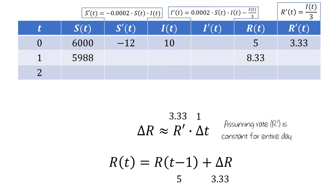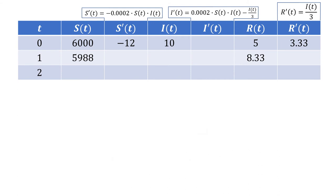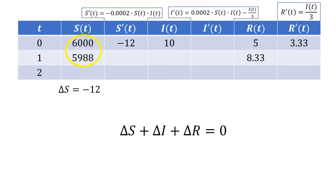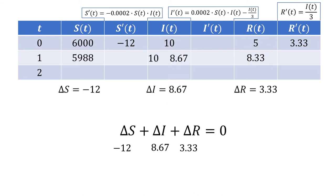Now we could repeat this process to compute the number of infected individuals at day 1, but there's a slightly easier way. We're assuming this is a closed system — there aren't any people coming into or leaving the population. So the total change in the three groups has to add up to 0. There are 12 fewer susceptible at t=1 than at t=0, and there are 3.33 more removed individuals. Combining these, there needs to be an additional 8.67 infected people at t=1, which means there must be 18.67 infected individuals at t equals 1.